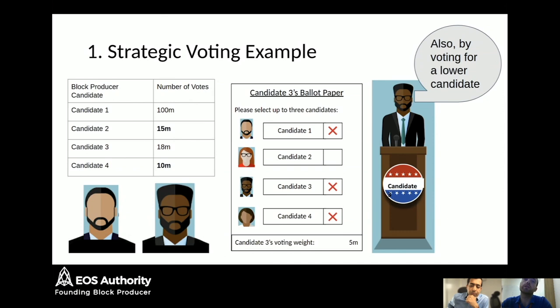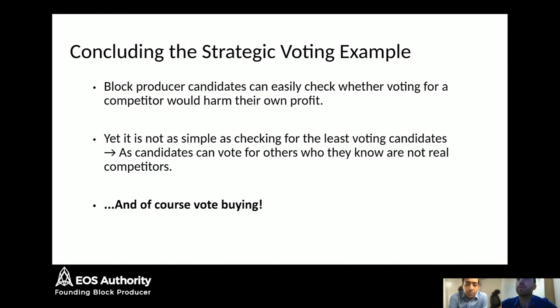You can be more tricky about this. If you want to hide the behavior, you can vote for other candidates you don't think will be your rivals for the next election cycle. In this case, candidate three tries to be a bit more tricky and votes for candidate four, hoping no one can say they've been manipulating their ballot. Strategic voting is not as simple as just looking for block producer candidates who haven't voted for many people — they might still be voting for many candidates strategically.